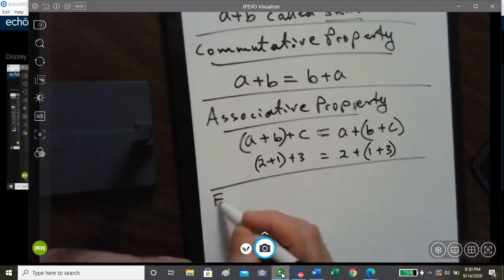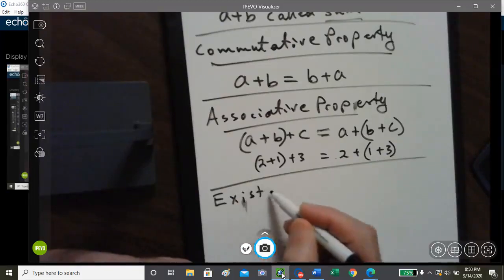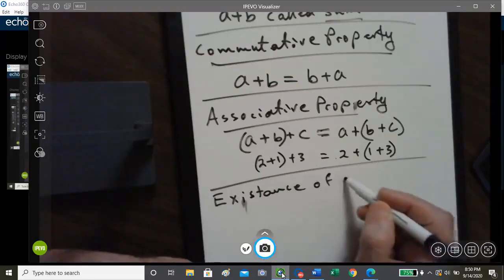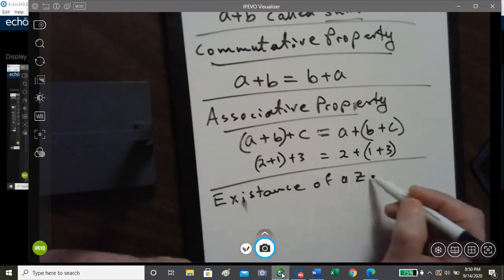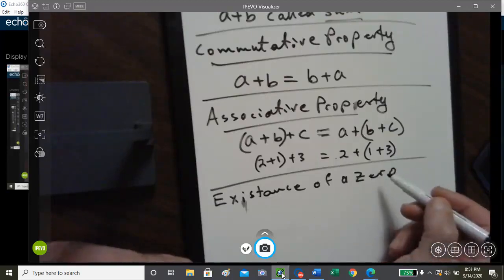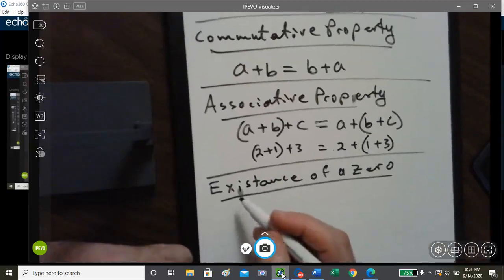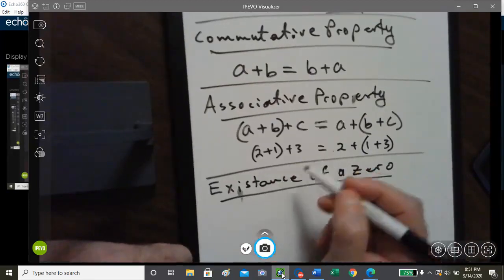And next, we have the existence of a zero. Basically, there's one and only one number called zero.